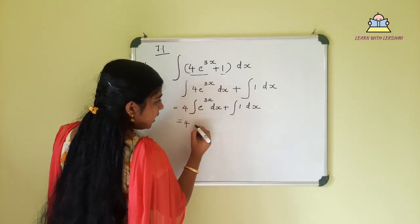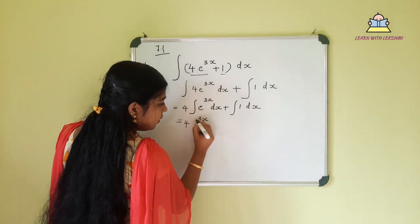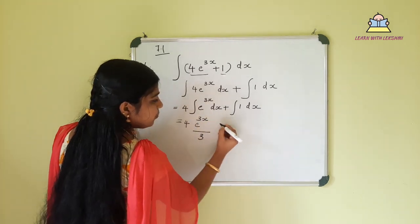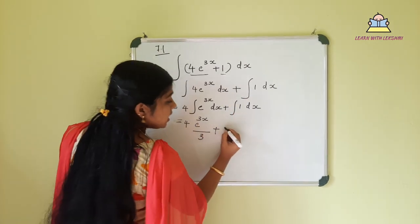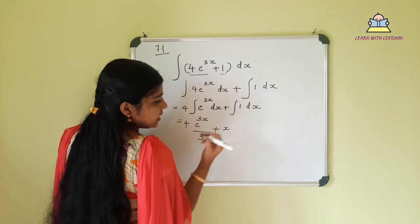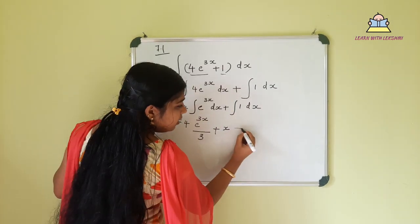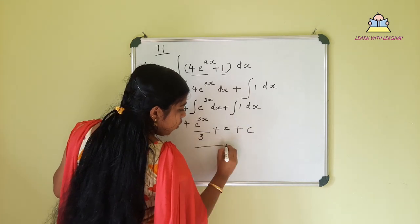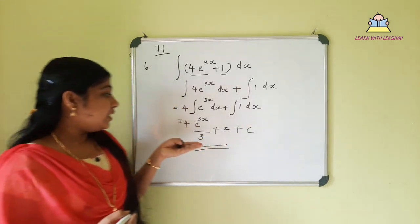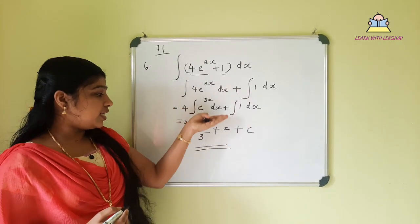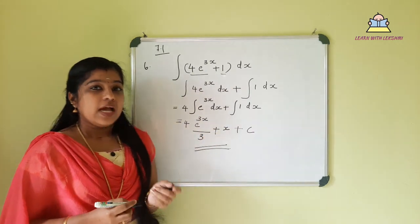For the e raised to 3x integral, we apply the exponential rule: e raised to 3x integrates to e raised to 3x divided by 3, plus the constant. The integral of 1 dx is x. So the final answer is 4 e raised to 3x by 3, plus x, plus c.